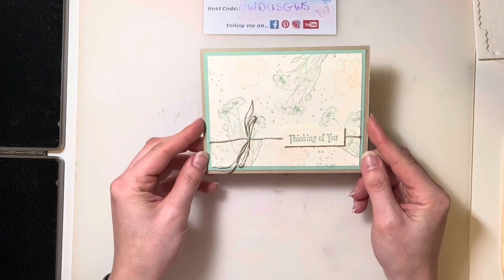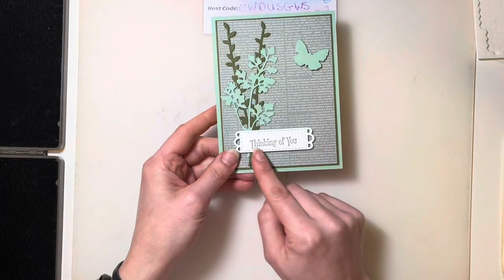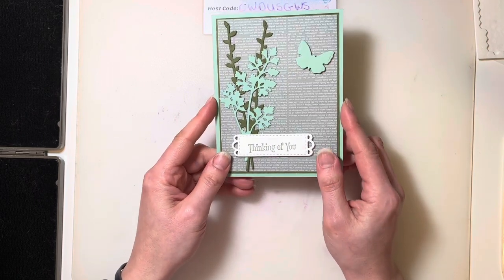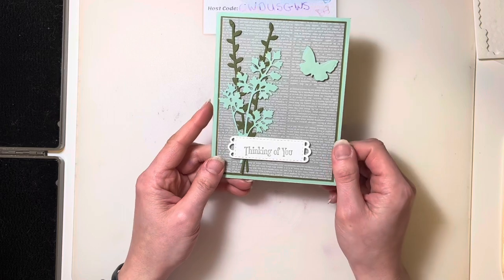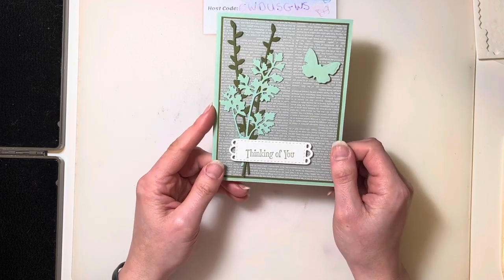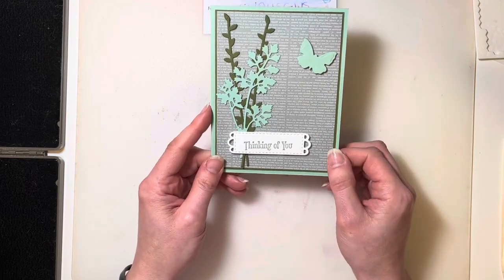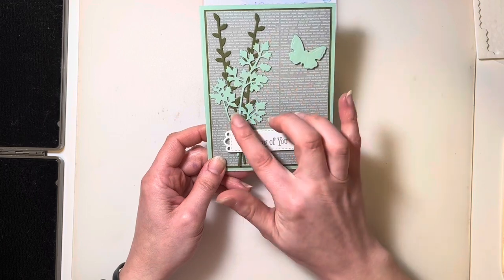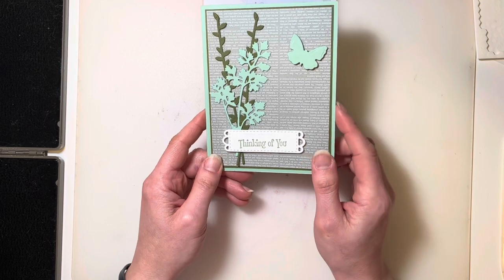Now, as always, I do have another sample using the same stamp set. So this time around, I've got that same phrase, that thinking of you, and I'm using it with a few of the different dies that coordinate from the Meadows die set. And in the background is just a piece of the Fancy Layering Designs designer series paper from the January to June mini catalog. It's a really fun bit of vellum. I'm actually really looking forward to using some of the other designs. And I love how the die pieces just kind of pop out and the vellum just kind of offers a nice, soft, subtle background to it.